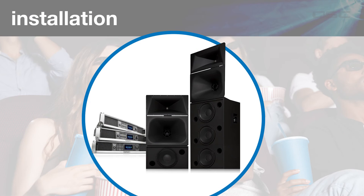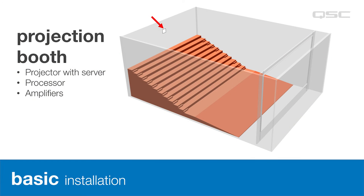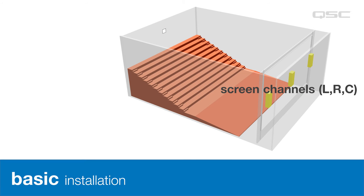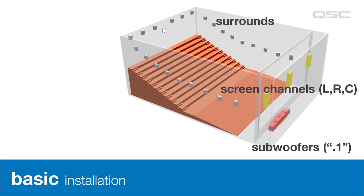Now let's talk about the audio products and how they're installed. In traditional cinemas, projection and audio electronics are installed in racks in a booth behind and above the theater. Most soundtracks require three types of loudspeakers — screen channels, surrounds, and subwoofers. Screen channel loudspeakers are located behind a perforated screen, subwoofers on the floor below the screen, and surrounds are mounted along the side and back walls.